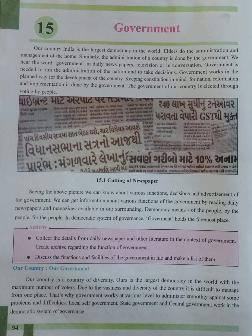Our country, our government. Our country is a country of diversity and is the largest democracy in the world with the maximum number of voters. Due to the vastness and diversity of the country, it is difficult to manage from one place. That is why the government works at various levels to administer smoothly. Local self-government, state government, and central government work in the democratic system of governance. India has 28 states and 8 union territories including the national capital Delhi.